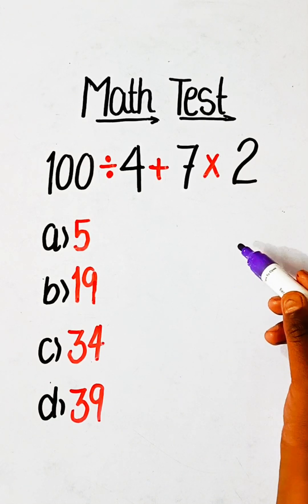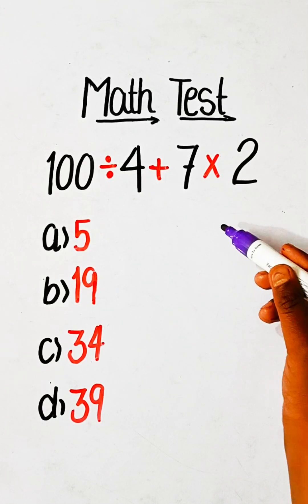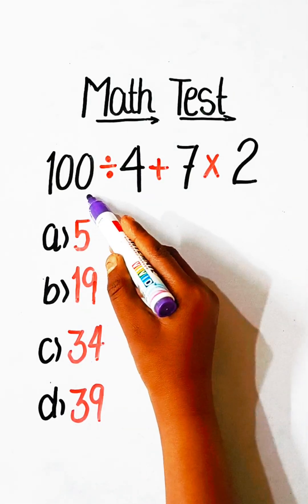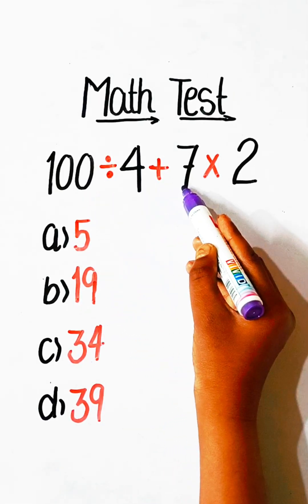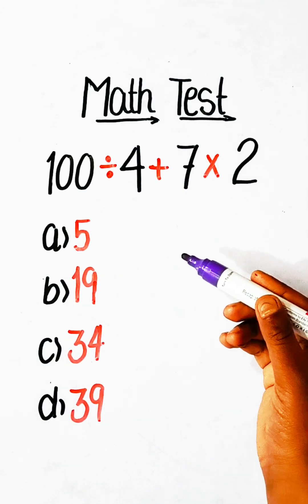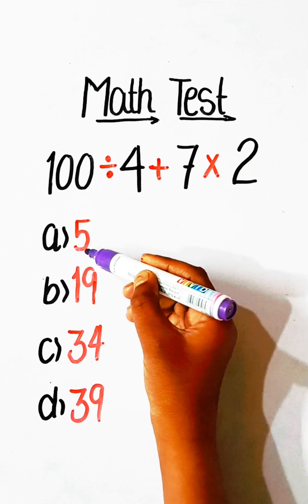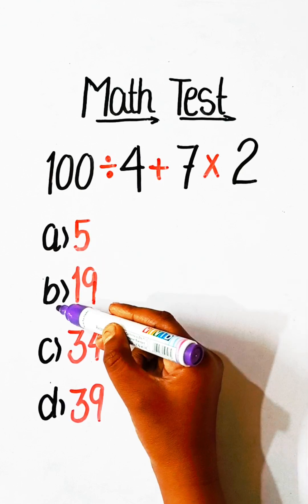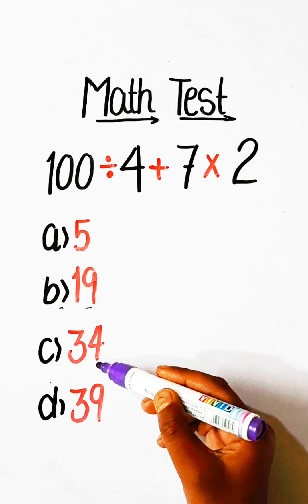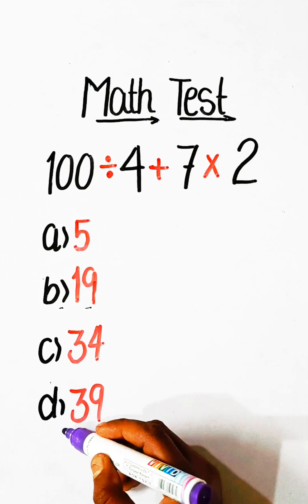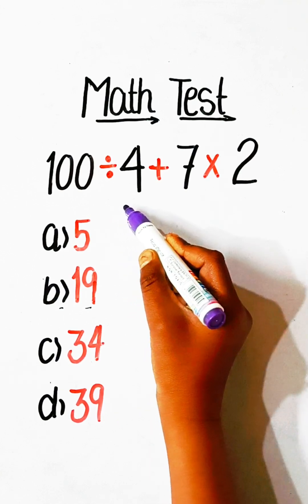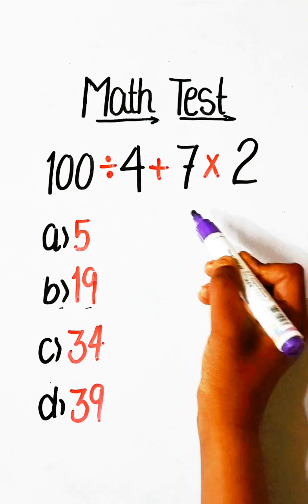Hello everyone, welcome to another basic math lesson. 100 divided by 4 plus 7 multiplied by 2 equals what? Option A: 5, Option B: 19, Option C: 34, or Option D: 39.